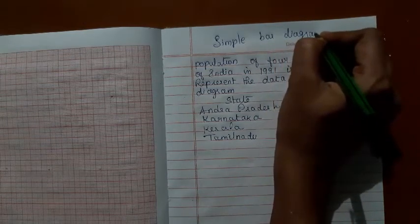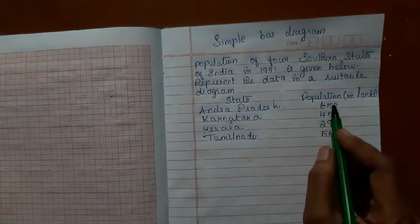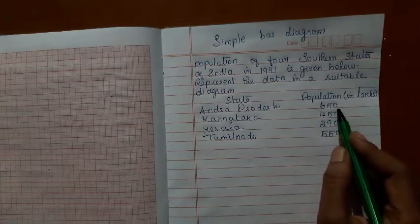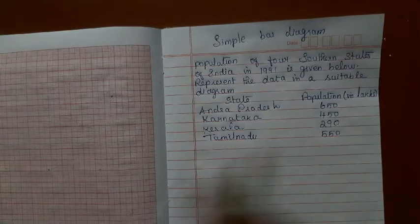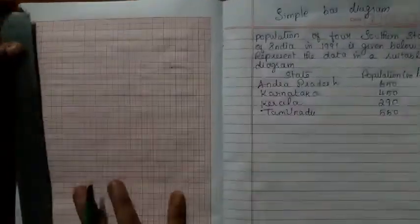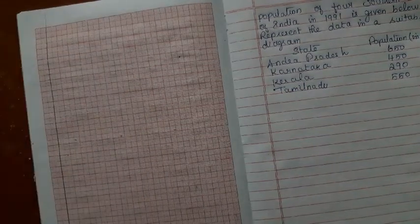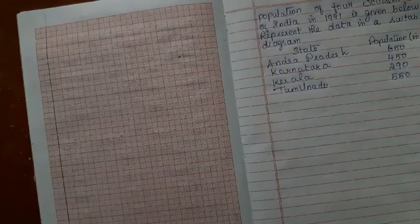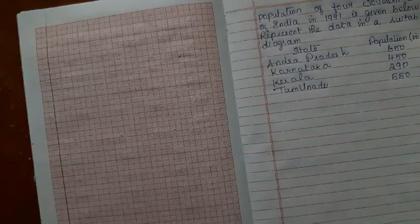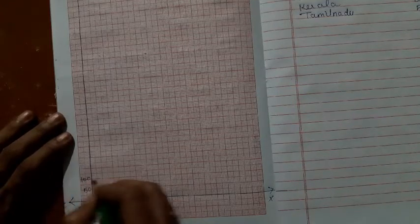The least value here is 290 and the highest value is 650. You should select a scale in such a way that all these values can be accommodated. This is my x-axis. On y-axis, I take 1 cm equal to 50 units.